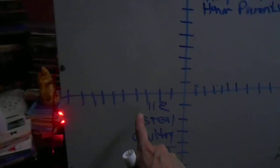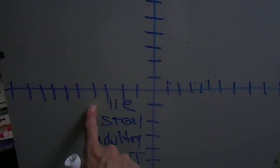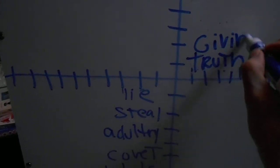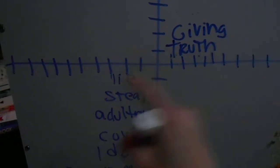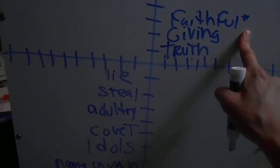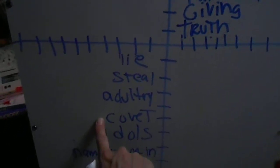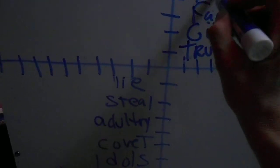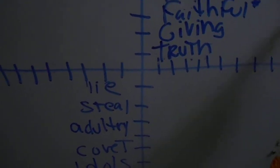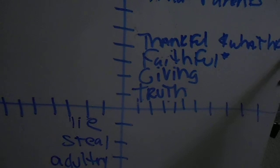We have some holes to fill in here. Lying makes Him angry, telling the truth would make Him happy. Stealing makes Him angry, giving makes Him happy. Adultery would make Him mad, being faithful would make Him happy. Coveting what we don't have — being thankful for what we do have would make Him happy.